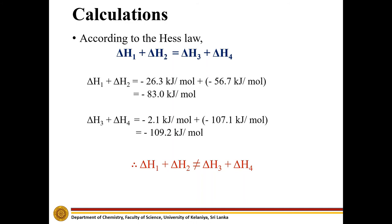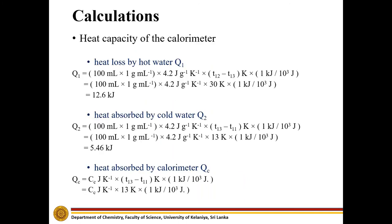However, looking at these calculations, we can clearly see that the sum of the enthalpy changes of the reactions of path 1 is not equal to the sum of the enthalpy changes of the reactions of path 2. That means the calorimeter is not as well insulated as we assumed earlier. We therefore need to calculate the heat capacity of the calorimeter.